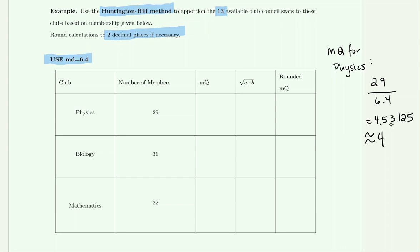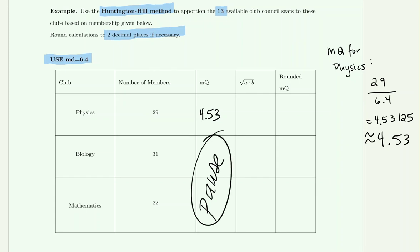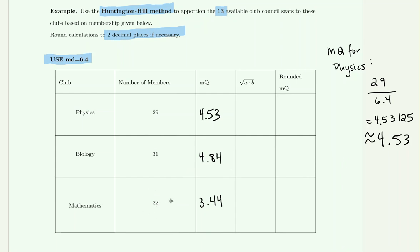We were asked to round to two decimal places. For biology, taking its population divided by 6.4 gives an MQ of 4.84. Taking the 22 people in the mathematics club divided by 6.4 gives an MQ of 3.44. All of this so far is the same as what we would do in the Jefferson method.